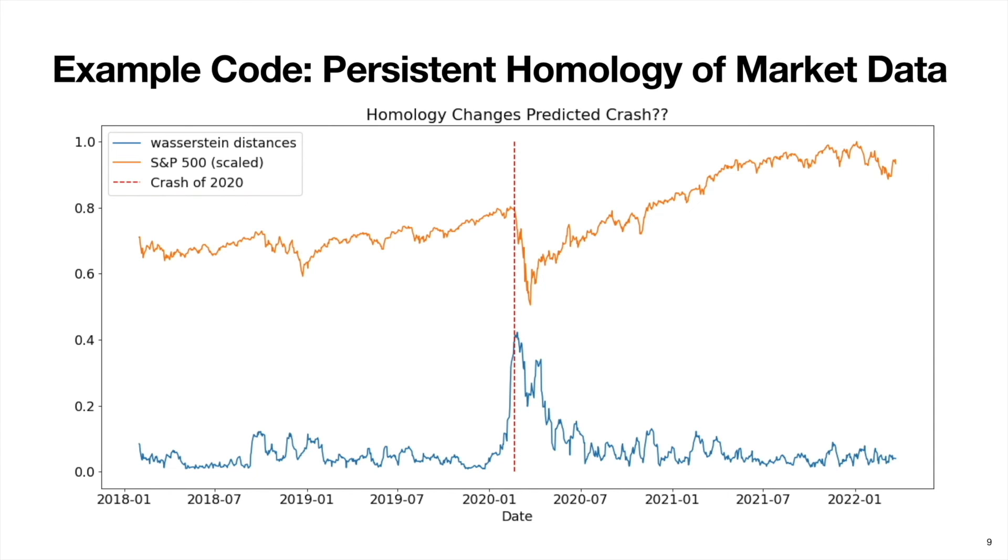So did homology changes predict the crash of 2020? Well, I wouldn't go that far. But this is indeed interesting. One idea to investigate this further is one could try to use these Wasserstein distances to predict future market index prices. So if past distance values predict future index prices, then maybe there's something here. So as you may be able to see from this example, there's a lot of room for creativity when using persistent homology in practice.